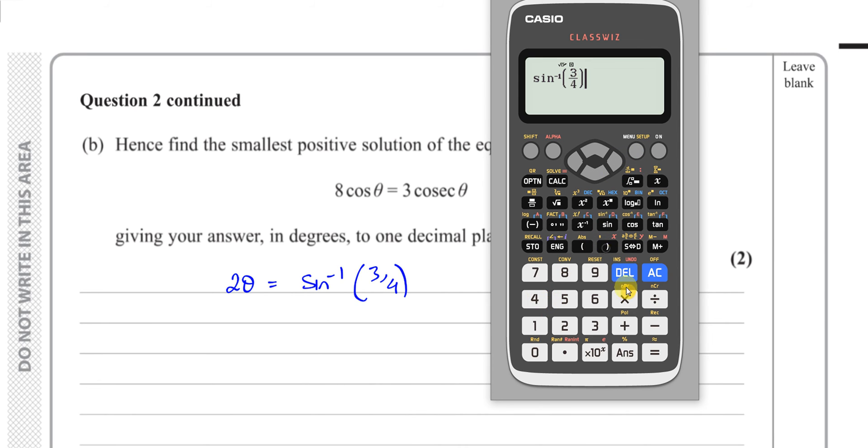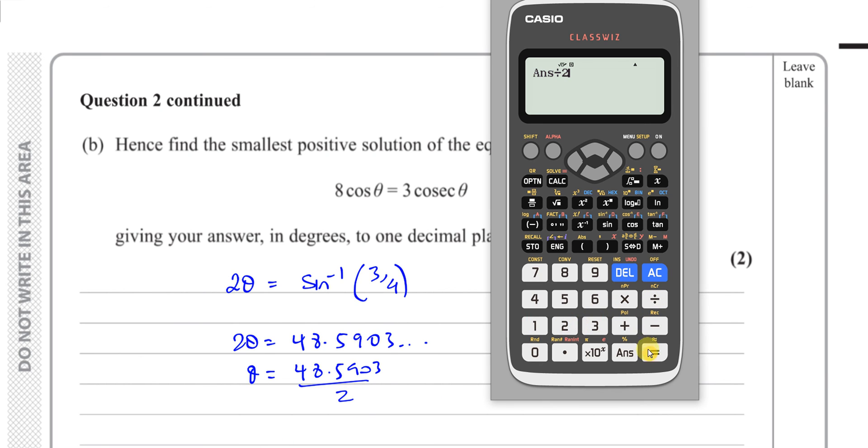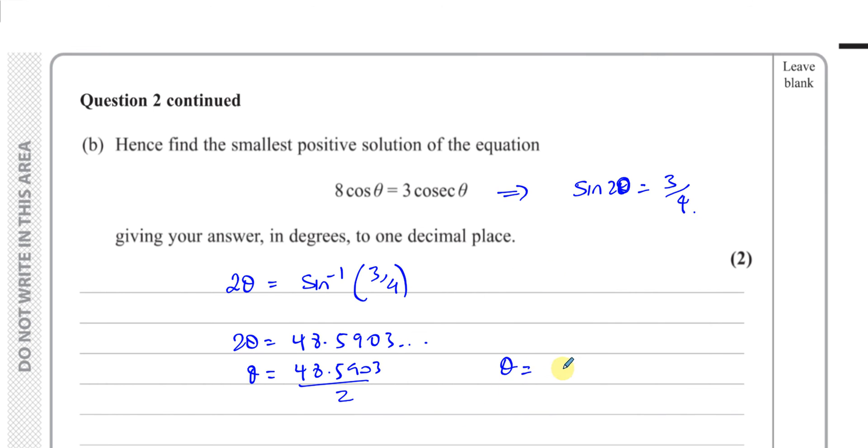So inverse sine 3 quarters, and that will give us the angle in degrees. So that's 48.590, the smallest positive solution of the equation. Okay, so 2θ is equal to 48.590. So 2θ equals 48.5903 dot dot dot. So θ therefore is going to be 48.5903 divided by 2. So θ is going to be 24.295. Okay, so θ is equal to 24.3 degrees.